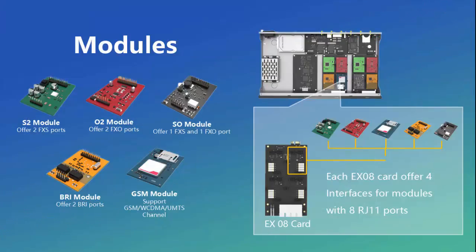S-Series adopts modular design, so users can customize the extension type and trunk types according to their needs. The green S2 module has two FXS ports. The red O2 module provides two FXO ports. The black SO module has one FXS port and one FXO port. The orange B2 module provides two BRI ports. The last blue one provides one GSM channel or one UMTS channel.